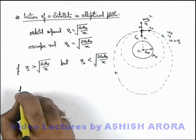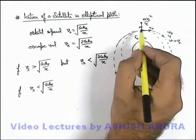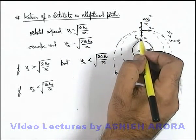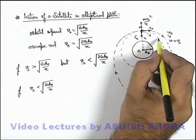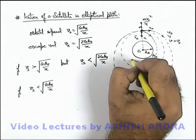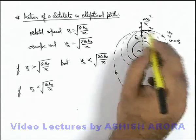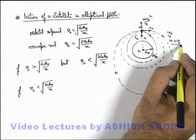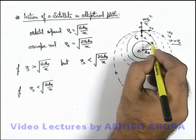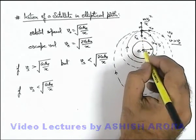Similarly, if the satellite speed is less than the orbital speed √(GMₑ/x), then it is quite obvious that the centrifugal force will be less and gravitational force will be more. So in this situation the satellite will come inside the circular orbit. If v is less than the orbital speed, it will follow again an elliptical path, but Earth's centre will be located at the farthest focus of the elliptical path — whereas when speed was more than the orbital speed, Earth's centre was located at the nearest focus from the projection position.